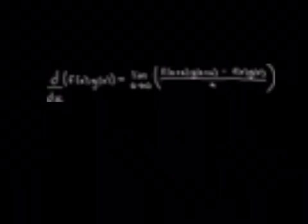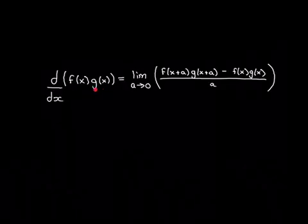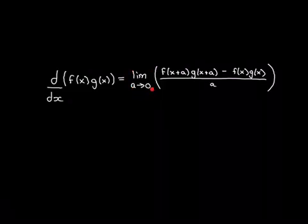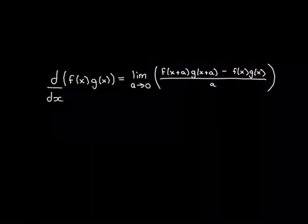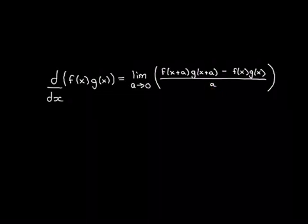If we go to the definition of differentiation — and if you don't understand the definition, please watch my earlier video in the calculus playlist on why differentiation works — and we want to differentiate f(x) times g(x), we put it into the definition. It's the limit as a approaches 0 of the function evaluated at x plus a, which gives f(x+a)·g(x+a), minus the value at x, which is f(x)·g(x), all divided by a.